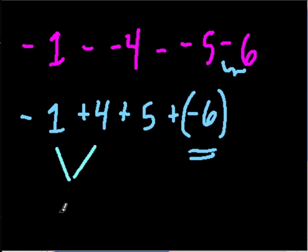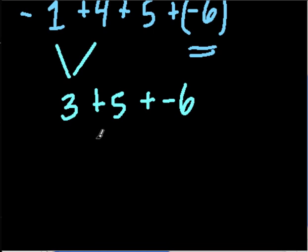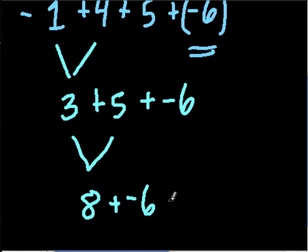Negative one and four is what? Well, that's just three. Rewrite my equation, plus five, and then plus negative six. Going from left to right, this is eight. And now I'm adding a negative six. Well, what's that? If I take six away from eight, that's two.